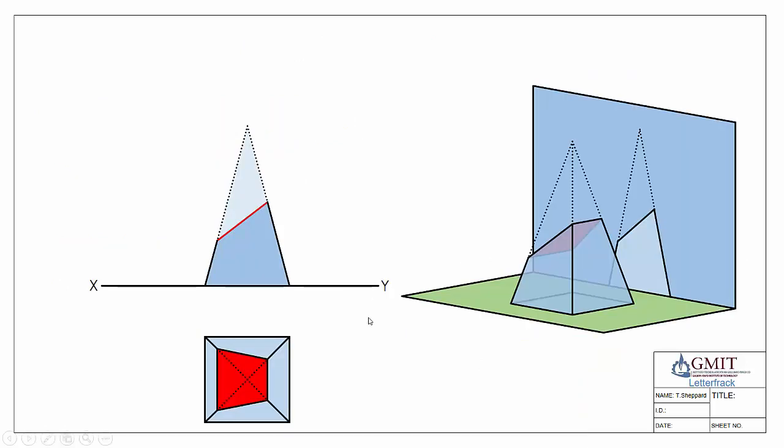This method is known as the auxiliary method. Basically what we're going to do is we're going to move ourselves to a new position where we can see or look straight in front of the edge view of our surface.